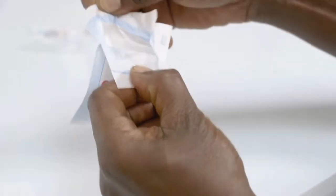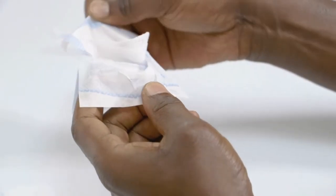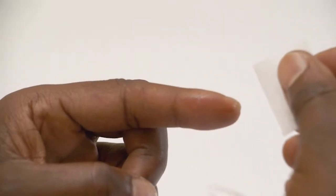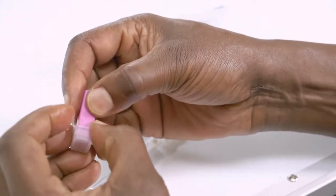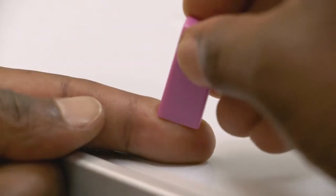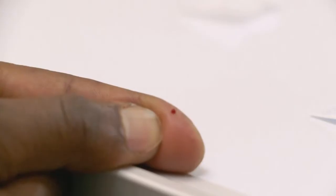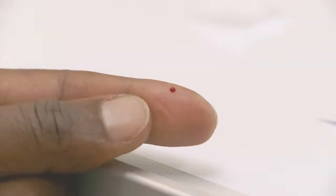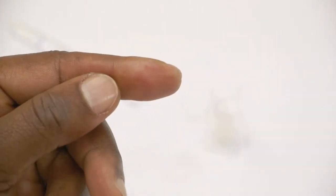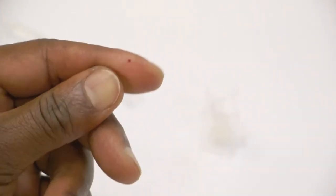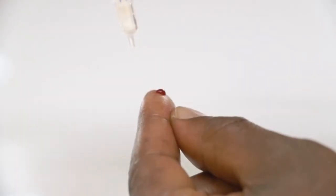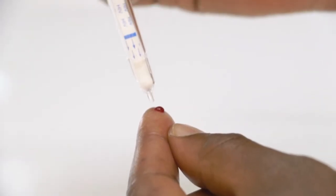Open alcohol swab and sterile gauze pad. Clean finger with alcohol swab. Uncap the safety lancet. Break your skin and squeeze out the first drop of blood. Wipe away first drop of blood with sterile gauze pad. Squeeze out second blood drop. Fill tip of testing device with blood.